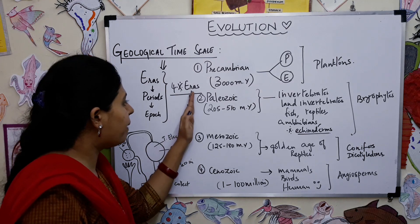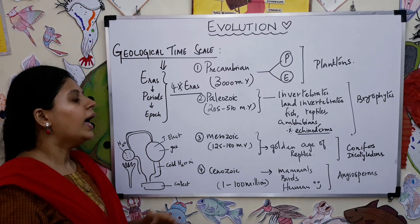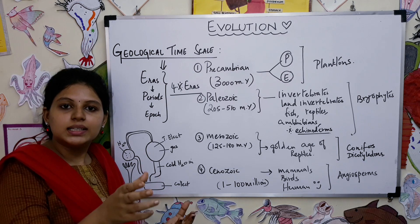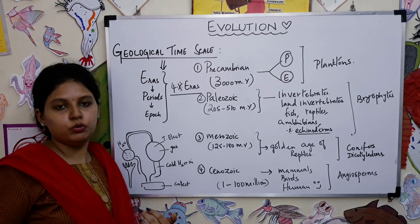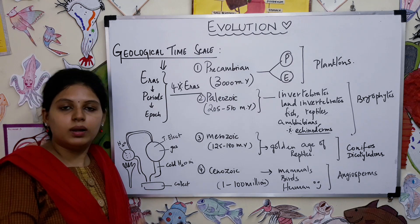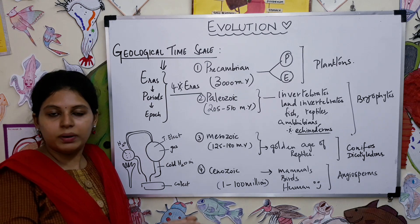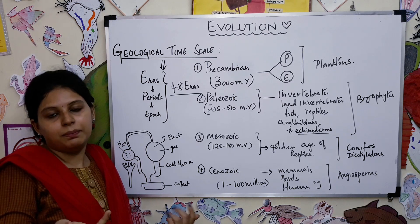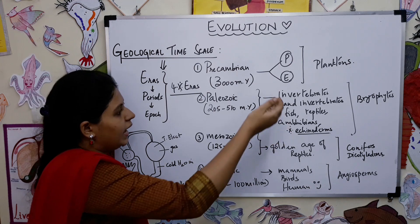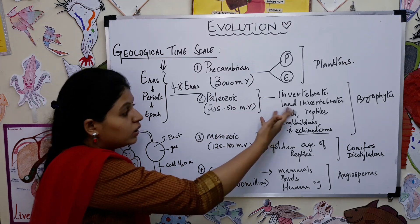Next is the Paleozoic era, ranging from about 205 to 510 million years ago. In this era we had invertebrates — organisms which do not possess a backbone or spinal cord. Most of these invertebrates possess hemocoel, meaning their blood does not carry hemoglobin; instead they have a white-colored pigment called hemocyanin.